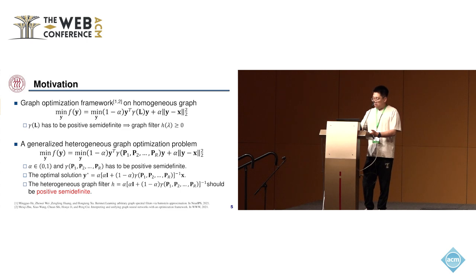On the other hand, according to the polynomial optimization framework defined on homogeneous graphs, there are some constraints for the graph filter. Specifically, in the optimization problem, the energy function gamma(L) must be positive semidefinite to ensure the function F(y) is convex. This condition makes the obtained graph filter H(lambda) satisfy H(lambda) greater than or equal to zero, where lambda denotes the eigenvalues of the Laplacian matrix L.